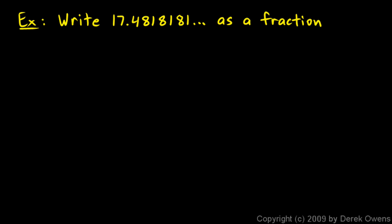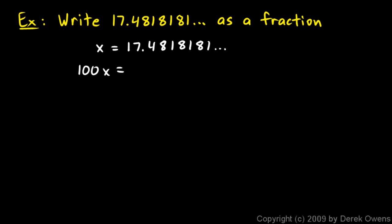Here's one more example: write 17.4818181 and so on as a fraction. The same technique continues to work. x is equal to 17.4818181 and so on. The block of digits that repeats is 81, which is two digits, so I need to multiply by 100. I get 100x on the left, and multiplying the right side by 100 moves the decimal two places to the right, giving 1748.1818 and so on.